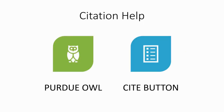Luckily, when it comes to creating citations, there are great options to help you. Purdue OWL is a website that can walk you through all the parts of creating and using citations. It even includes a style guide showing you how to build the two parts of different citations for different kinds of sources.